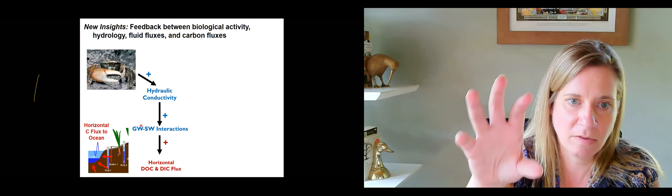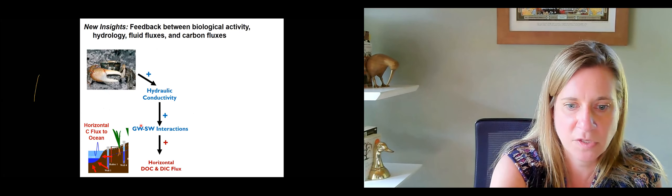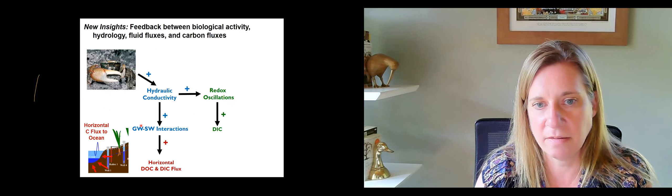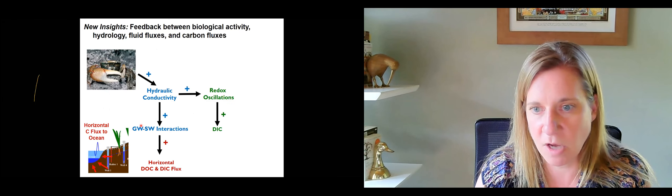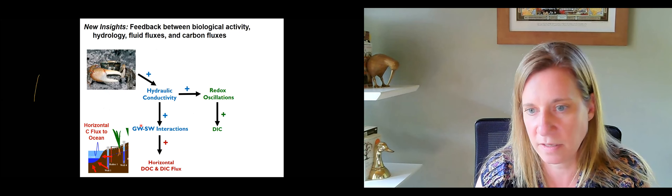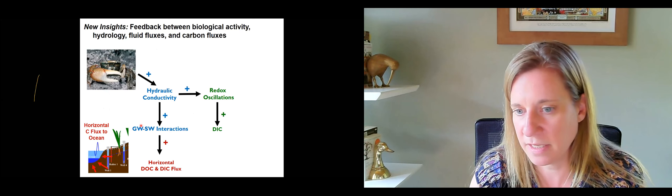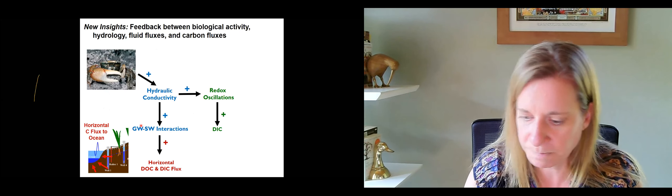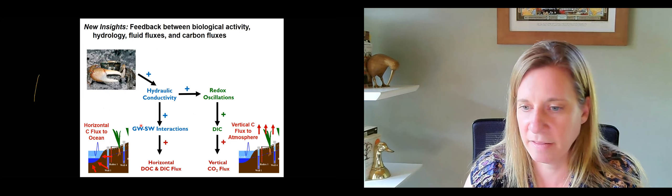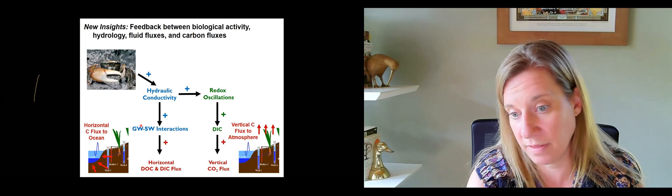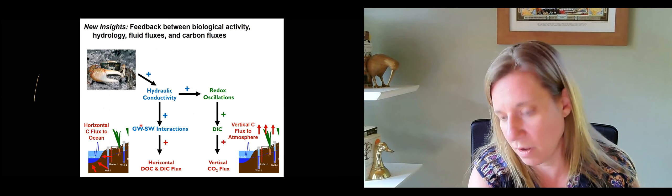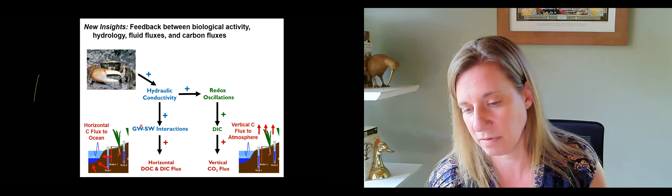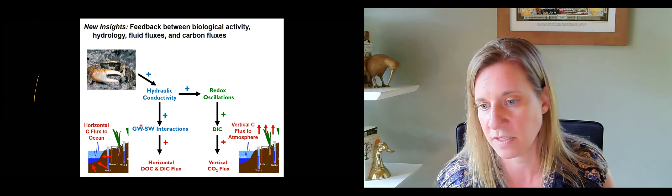The biology influences the hydrology and the lateral fluxes. The crabs also influence the redox oscillations, which increases the amount of dissolved inorganic carbon in the system — the CO2 — and therefore increases the horizontal flux because it's dissolved. There is also CO2 gas that effluxes to the atmosphere.